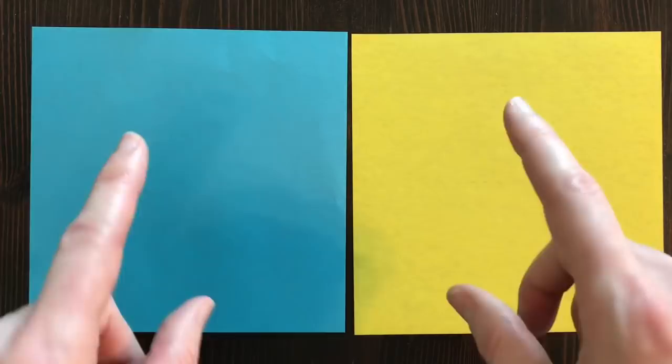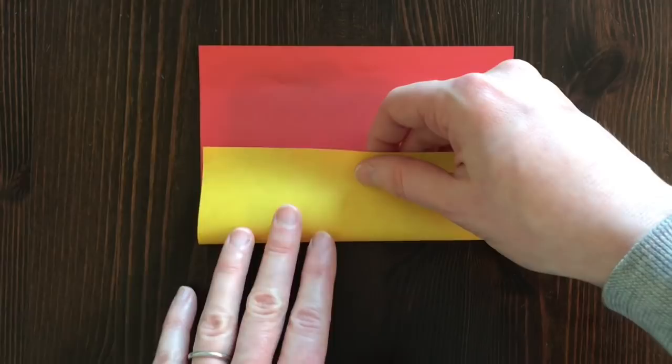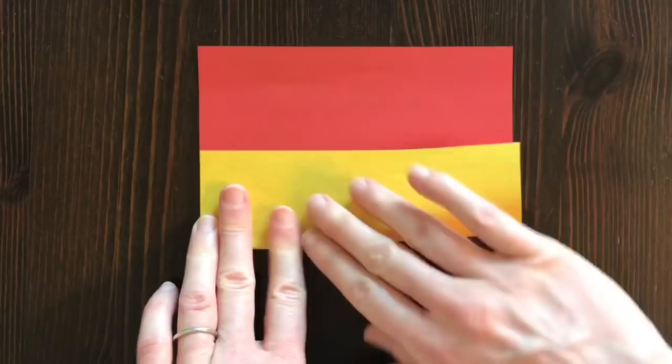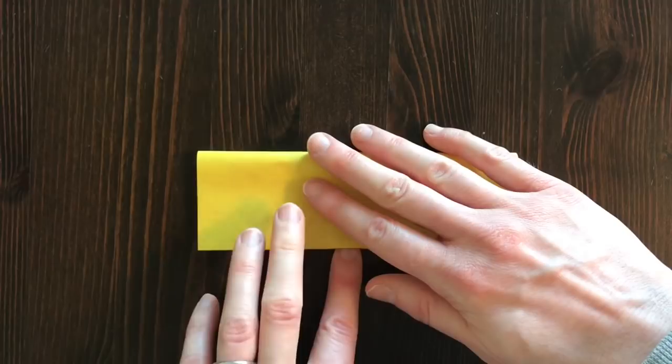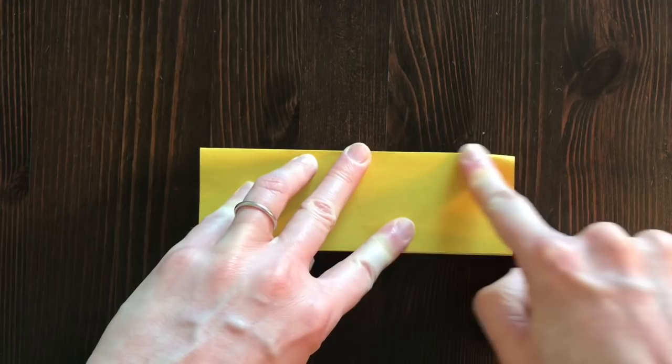So I'm going to set that aside. So what we want to do first is fold each square into thirds. Now I'm going to do the yellow one first. So let me get the blue one out of here. Now I want the yellow on the outside. So I'm going to fold once.